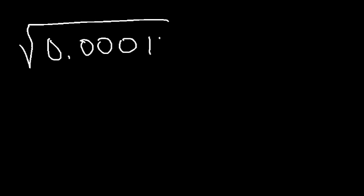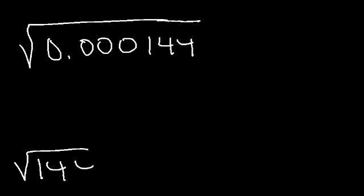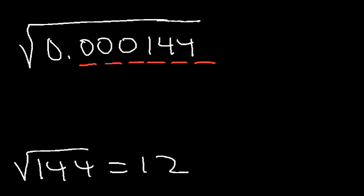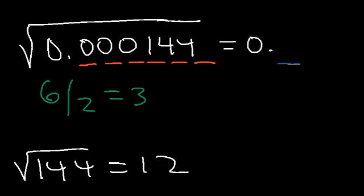Now let's try a larger number. What is the square root of 0.0000144? We know that the square root of 144 is 12. And we have 6 digits to the right of the decimal point. Therefore, 6 divided by 2 gives us 3, so our final answer needs to have 3 digits to the right of the decimal point — that's 0.012, with the last digit at the very end. If you type in the square root of 0.000144, you get 0.012.